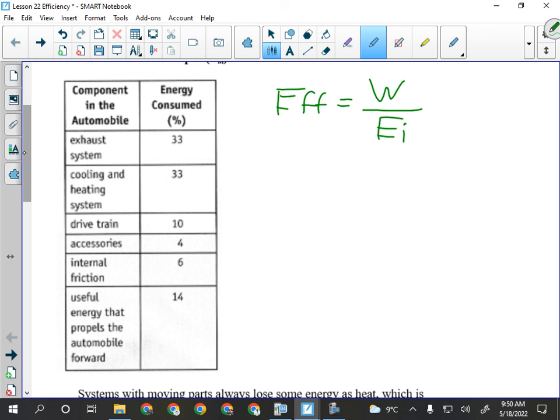So accessories, 4%. So that's power windows, power door locks, your stereo, your rear window defogger, your windshield wipers, heated seats, whatever else you got in there that uses electricity. That number can be more than 4%. It can be upwards of 10% depending on how much stuff you have in there. Internal friction within the engine, 6%. Your oil's not been changed recently. And that number can be higher. It also depends on what kind of oil, conventional or synthetic that you use. That number can be bigger than that. Useful energy that propels the automobile forward. 14%. So you put $100 worth of fuel in your car, $14 of it pushes the car forward. This is why we're shifting to more efficient ways to power cars.